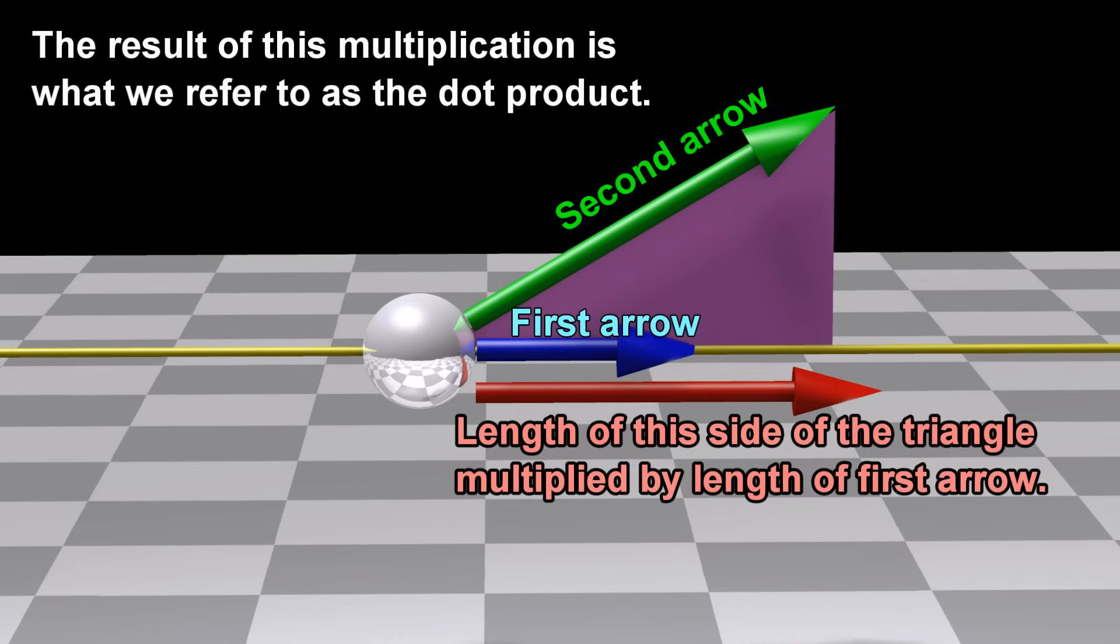The result of this multiplication is what we refer to as the dot product.